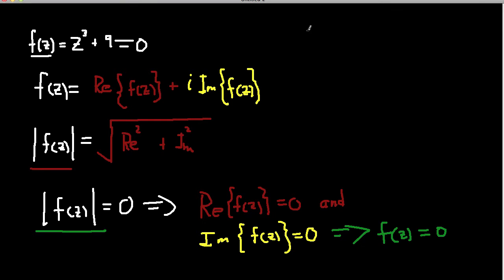In the last video I was discussing how when we have a complex-valued polynomial — here written as f of z, with the polynomial being z cubed plus 9 — because z is a complex number, the polynomial is also a complex number. To find the roots by plotting, we can plot the magnitude: the square root of the real part squared plus the imaginary part squared. The magnitude equals zero only if both the real part and the imaginary part are simultaneously equal to zero.